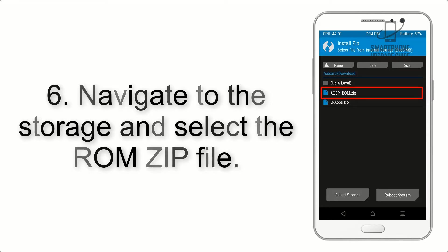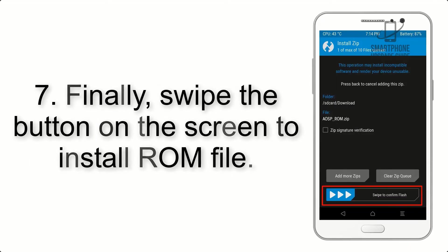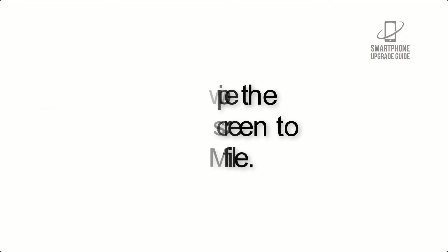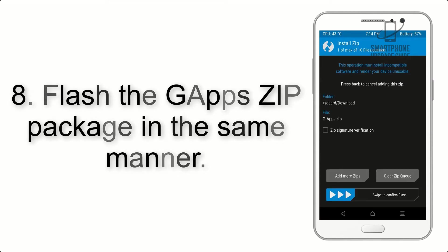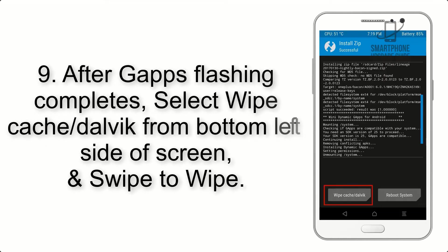Step 5: Go back to the recovery main screen and tap on the Install button. Step 6: Navigate to the storage and select the ROM zip file. Step 7: Swipe the button on the screen to install the ROM file.